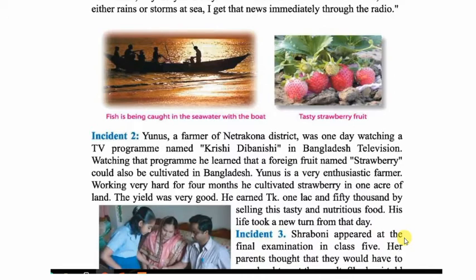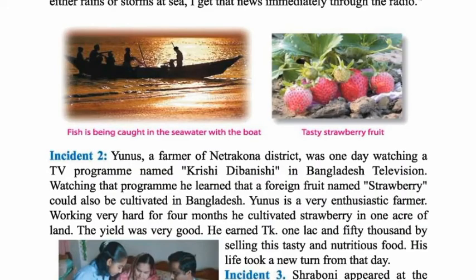Incident two: Yunus was watching a TV program named PC Divanish on Bangladesh Television. Watching the program, he learned that a fruit named strawberry could also be cultivated in Bangladesh. Yunus is a very hardworking farmer. Working very hard for four months, he cultivated strawberry on one area of land and the yield was very good.